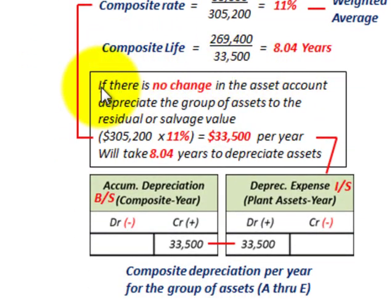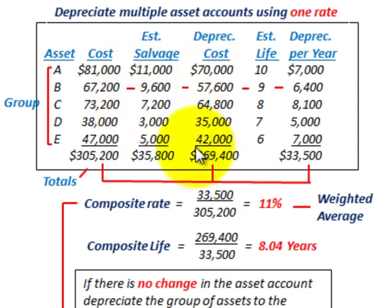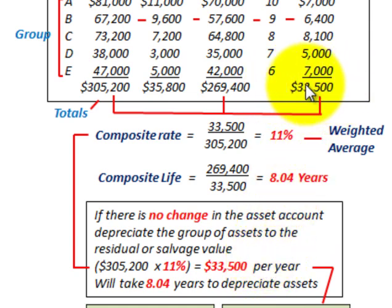In Case 1, if there is no change in the asset account, we depreciate the group of assets to their residual value. No change means costs, salvage values, estimated lives are unchanged, and no assets were sold off or added to the group. The depreciation per year is simply the total group cost of $305,200 times the composite rate of 11%, giving $33,500 depreciation per year. It will take 8.04 years to depreciate this total group of assets.